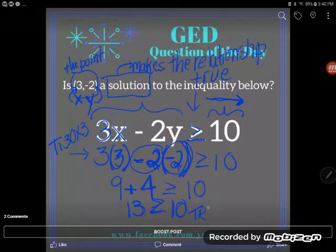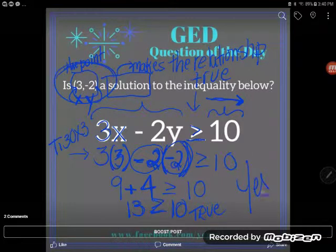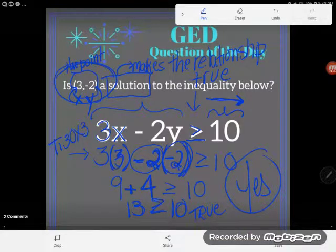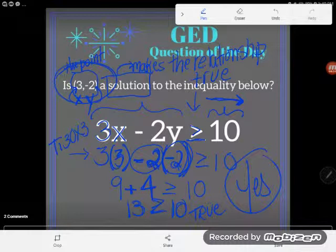It is true. And since it's true, that means that yes, (3, -2) is a solution to the inequality below. You've been asked 'Is it a solution?' That's just a yes or no question, so the answer here is yes. Great! If you have any questions about this, be sure to drop them in the comments. I'll be happy to clear up any issues you're having.